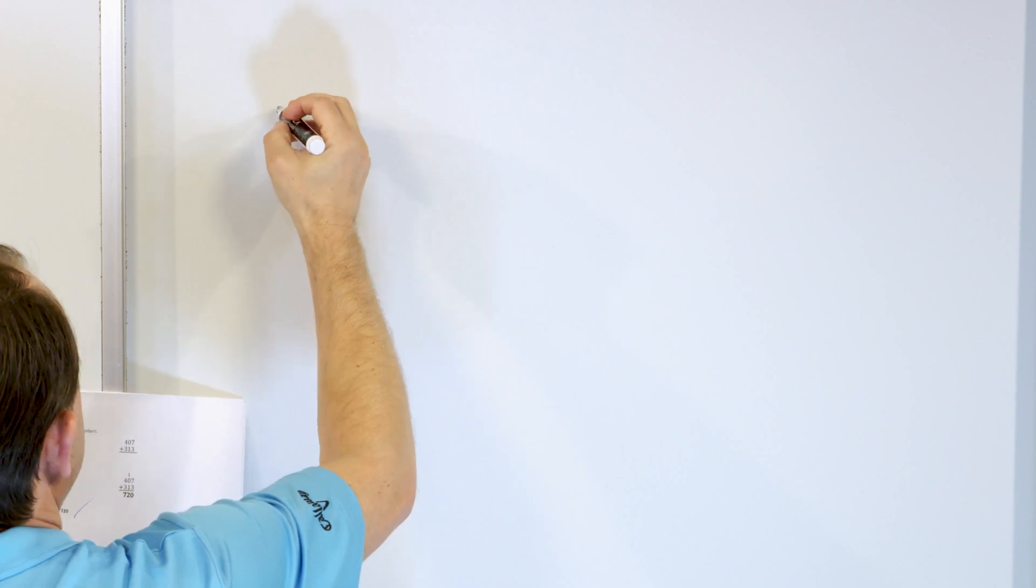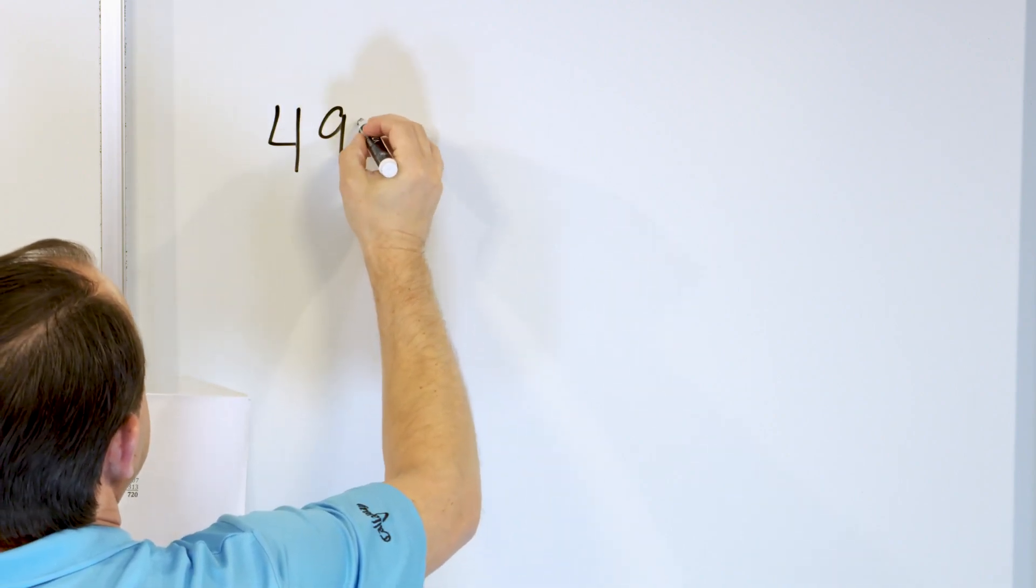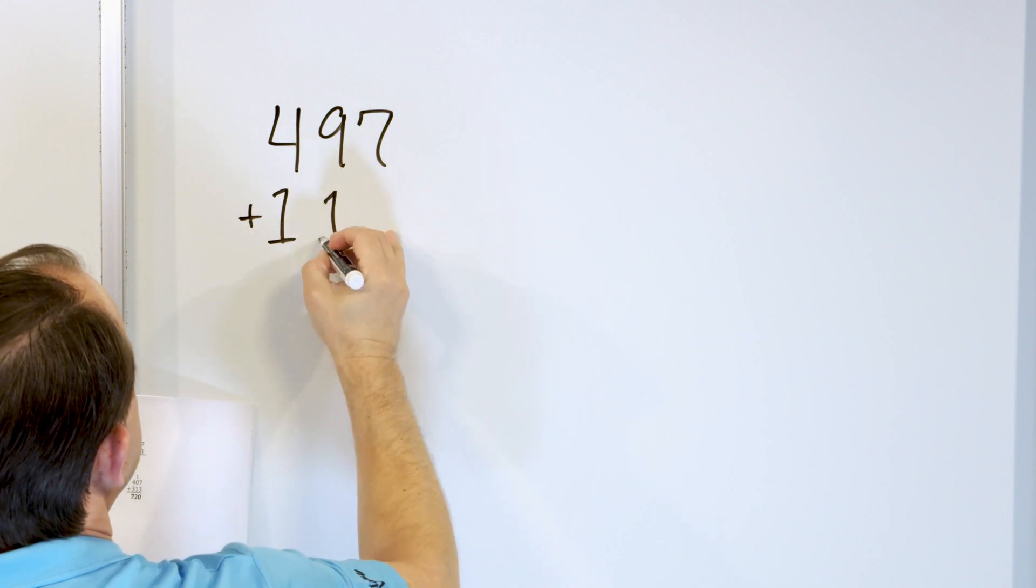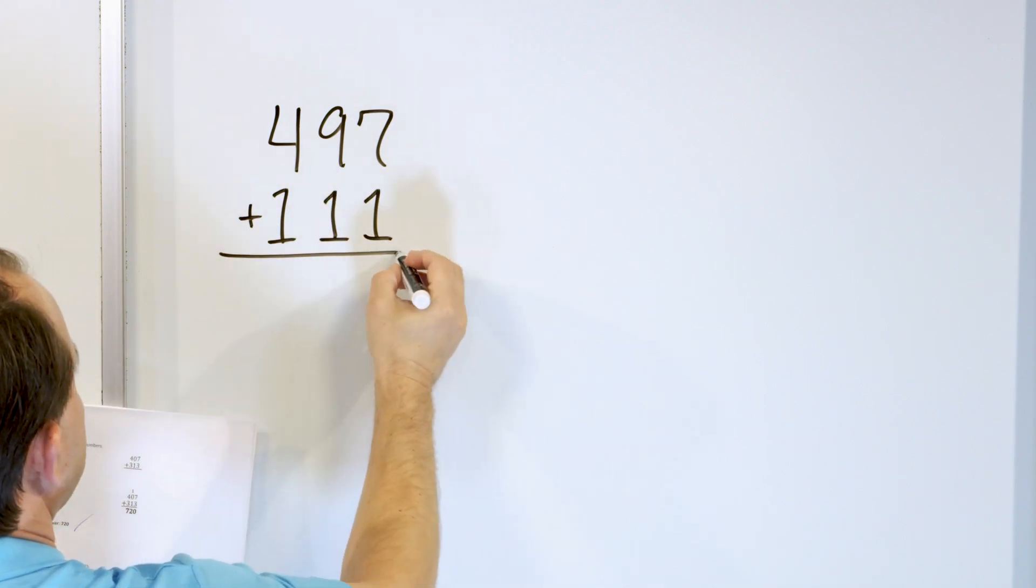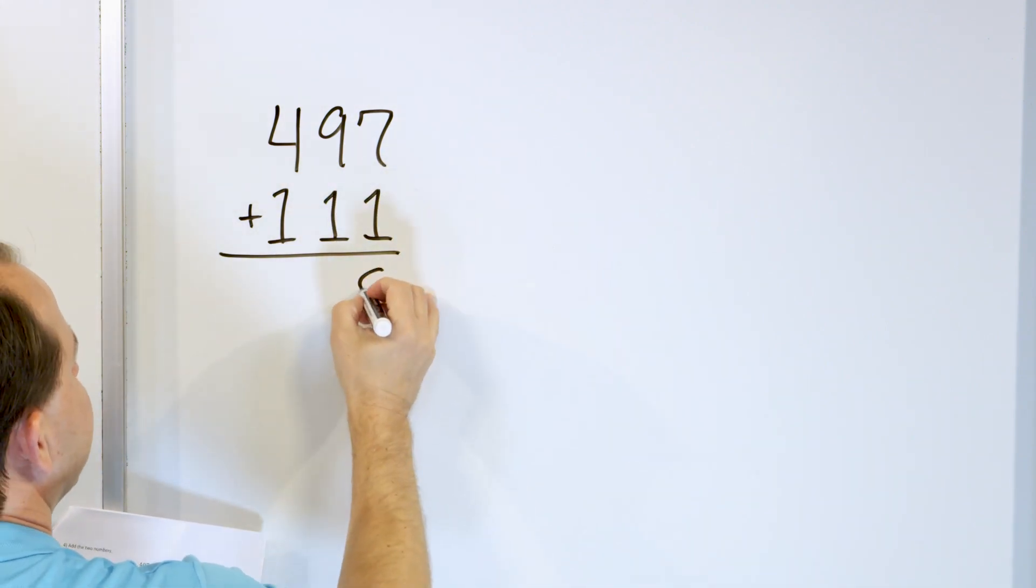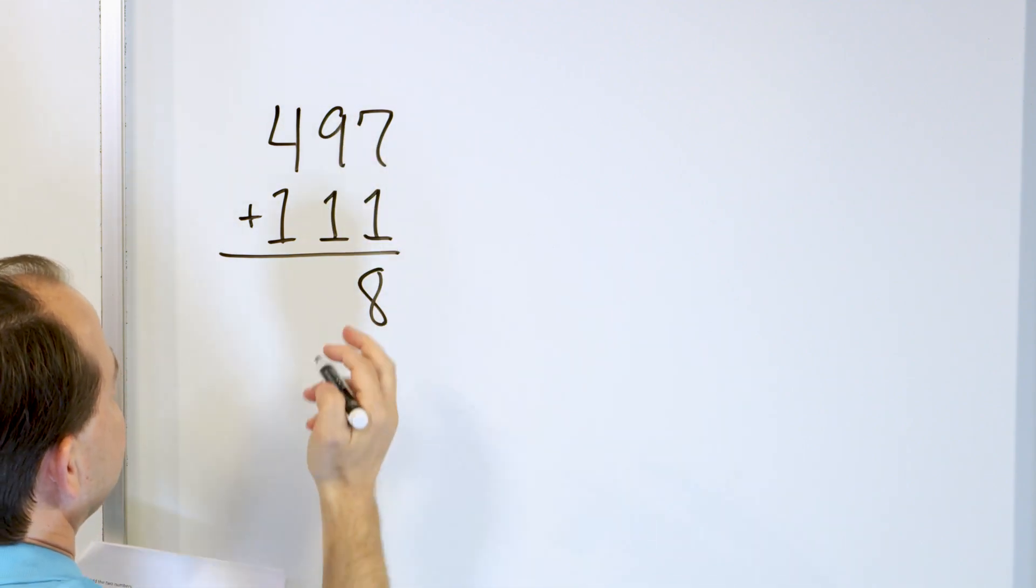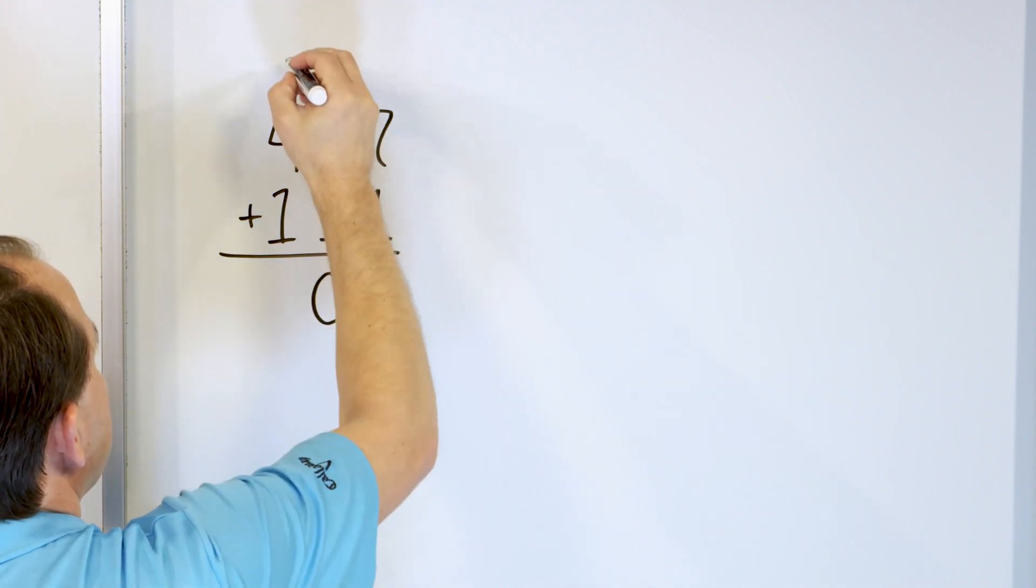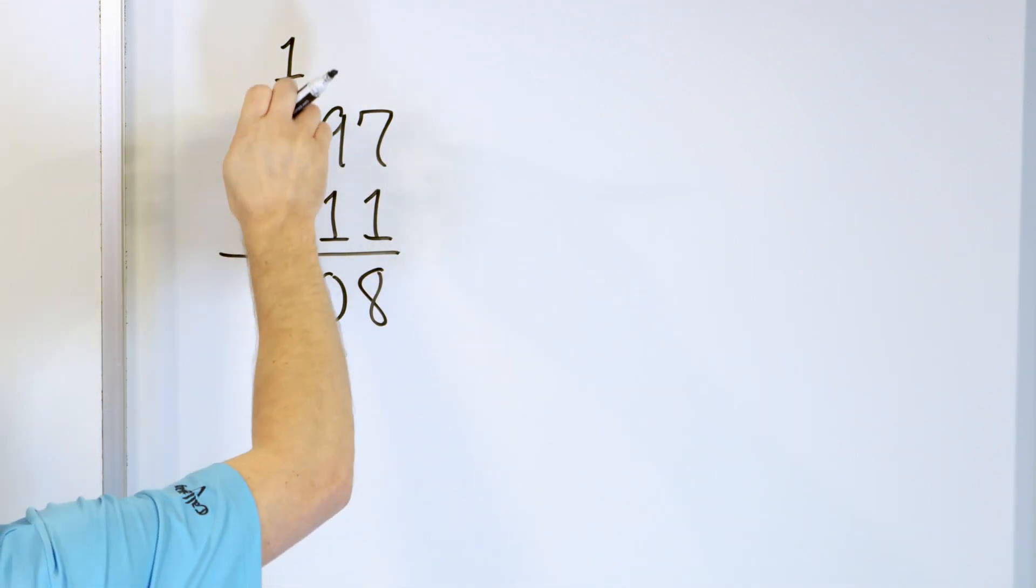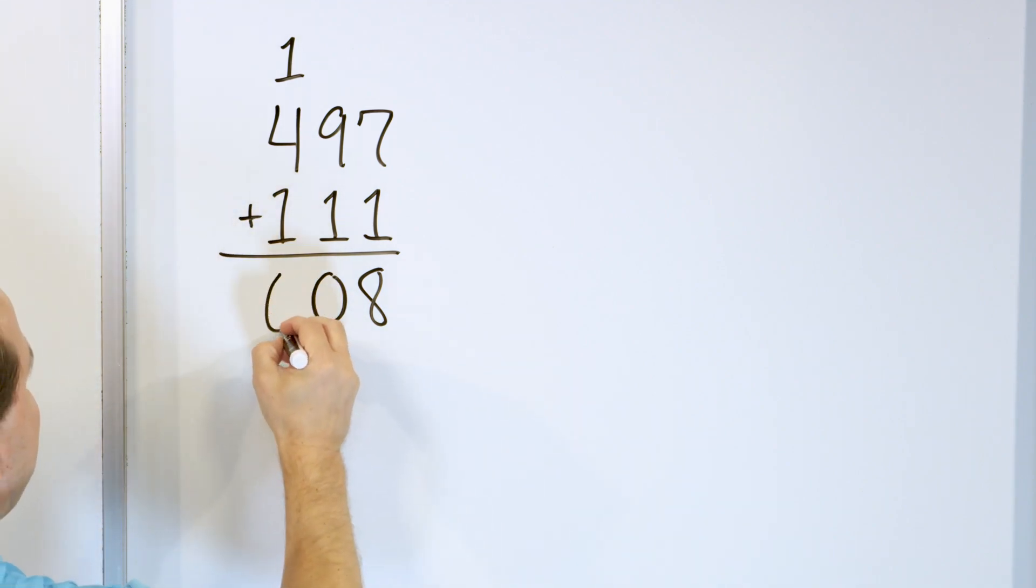We are cruising right along. Problem number 5, let's see what we have. Let's say we have 497, and we'll add to that 111. 7 going up 1 more is 8. 9 going up 1 more is 10, but we can't write 10 there because it's 2 digits. So we put a 0 here, and we'll carry the 1 to the next column. And we have 4, 5, 6. So 4 plus 2 there is 6. So you have an answer of 608.